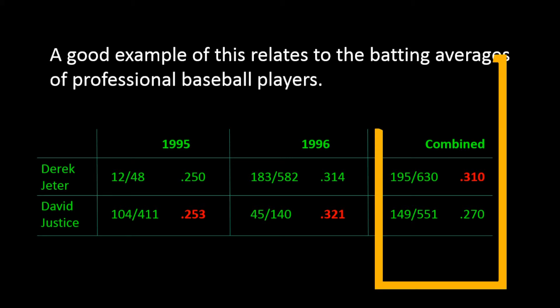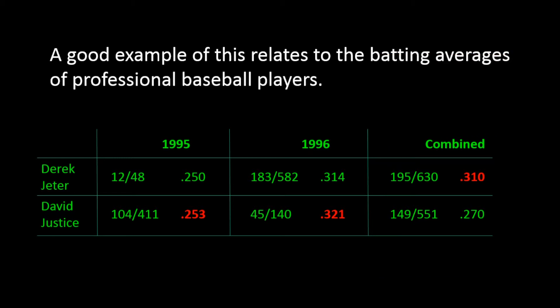Now suppose we aggregate or combine the data from the two years and compile a batting average for the two years together. When we do that, the combined column shows Derek Jeter's batting average as higher than David Justice's — .310 compared with .270. This is a great example of when data is looked at one way broken down, and then the very same data is looked at in a combined or aggregated way, and the results are completely different.